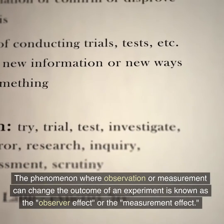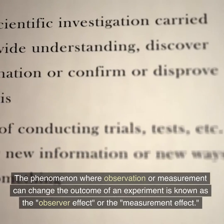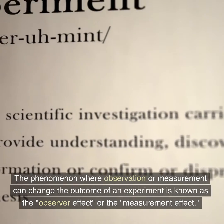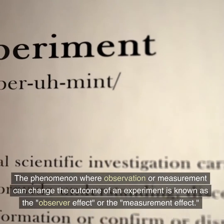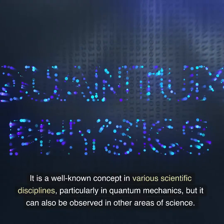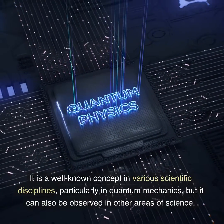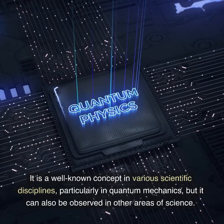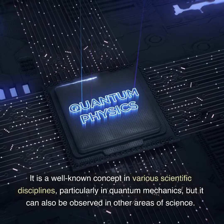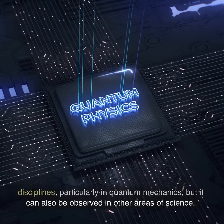The phenomenon where observation or measurement can change the outcome of an experiment is known as the observer effect or the measurement effect. It is a well-known concept in various scientific disciplines, particularly in quantum mechanics, but it can also be observed in other areas of science.